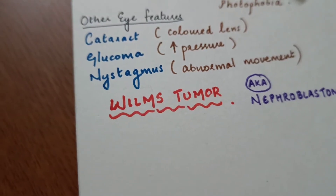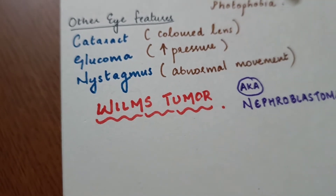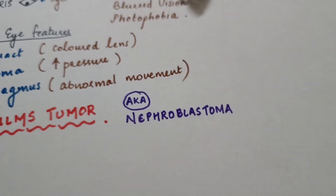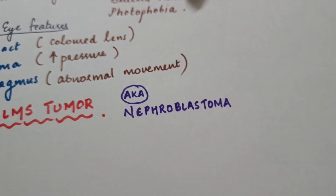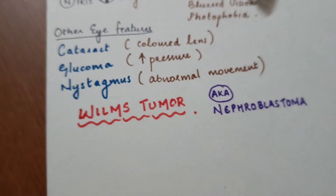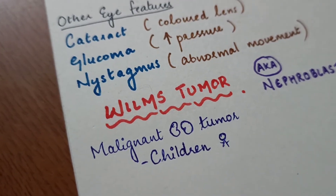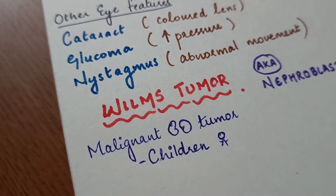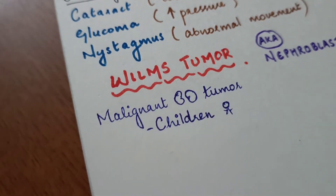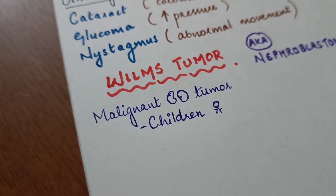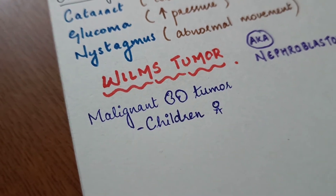Wilms tumor is also known as nephroblastoma. It is generally a malignant kidney tumor that affects mostly children.